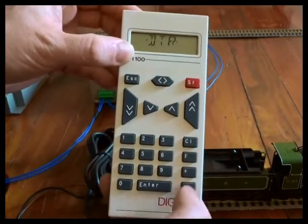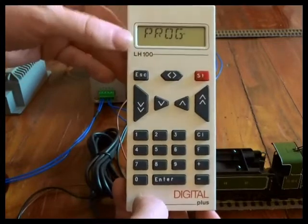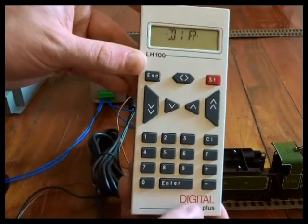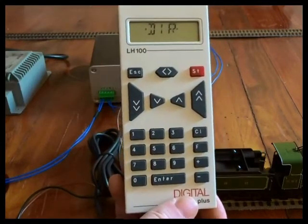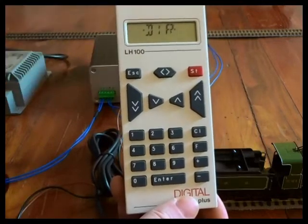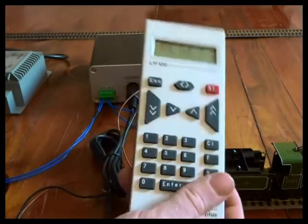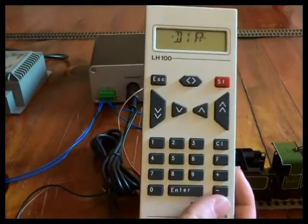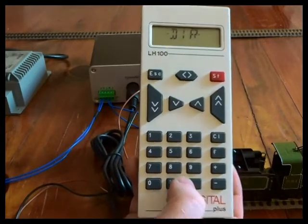If we go into the menu again and scroll around until we've got PROG for programming, press enter. It will start flashing. Press enter again to confirm that you want to do this operation. DIR is usually the first thing in the menu that comes up. You can use plus and minus to scroll around.